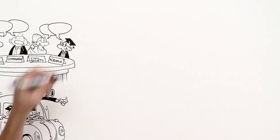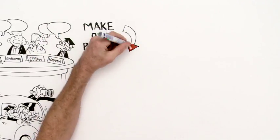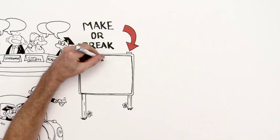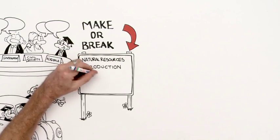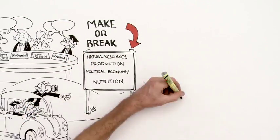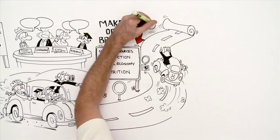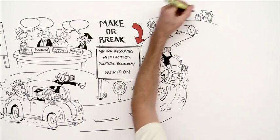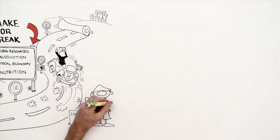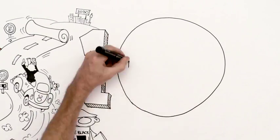They envisioned future scenarios about four make-or-break issues: natural resources, production, political economy, and nutrition, and looked at how these might unfold in South Africa over the next 15 years. Imagine that 2018 represents the tenth year of unromantic candlelit dinners thanks to the rolling blackouts.